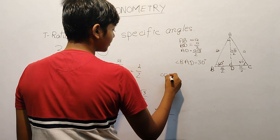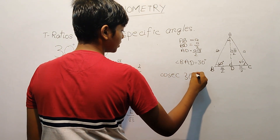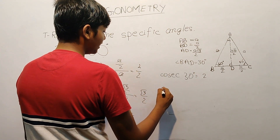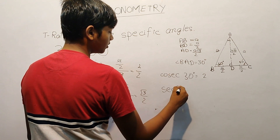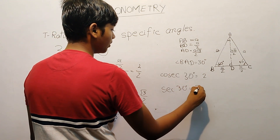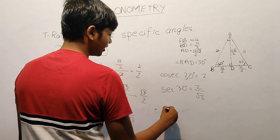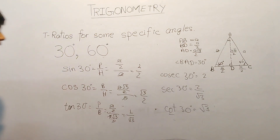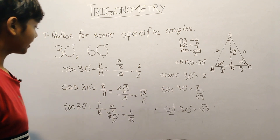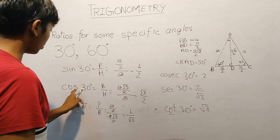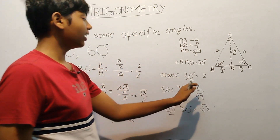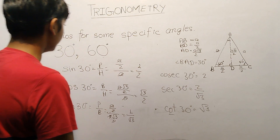Taking reciprocals: cosec 30° is 2, since the reciprocal of 1 by 2 is 2. Sec 30° is 2 by root 3. And cot 30° is root 3. So the values for 30 degrees are: sin 30° = 1 by 2, cos 30° = root 3 by 2, tan 30° = 1 by root 3, cosec 30° = 2, sec 30° = 2 by root 3, and cot 30° = root 3.